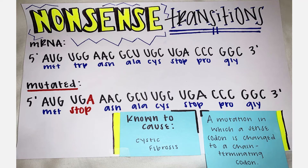Nonsense mutations are mutations in which a sense codon is changed to a chain-terminating codon. In this example, purine guanine is exchanged for purine adenine, changing the amino acid that it codes for from tryptophan to a stop codon, creating an earlier termination of the amino acid chain. This can disrupt the function of a protein, leading to genetic disorders.